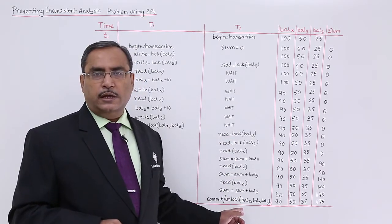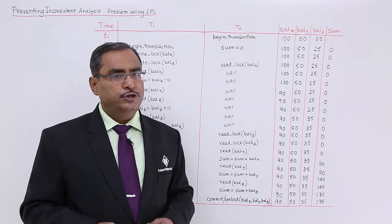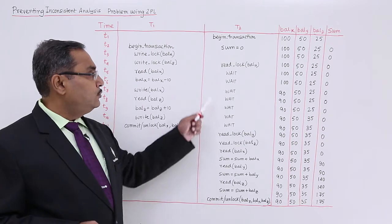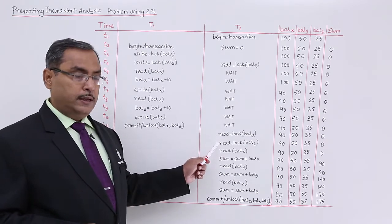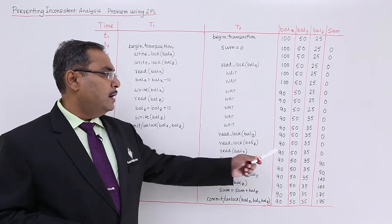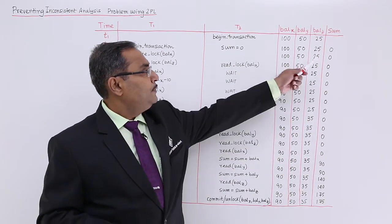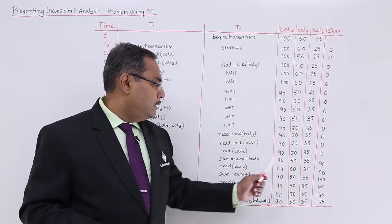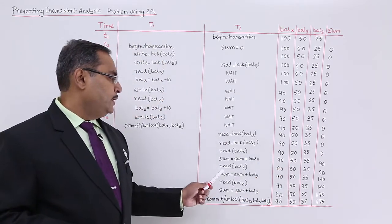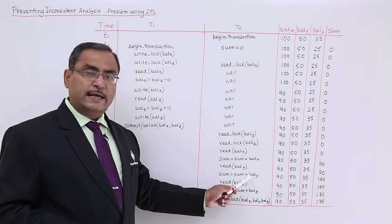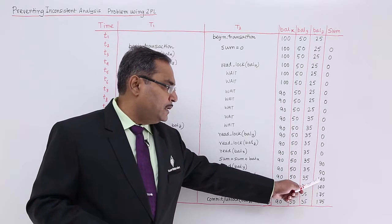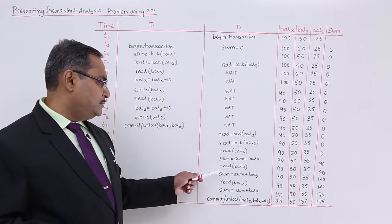Now those variables are now available for the transaction T2, so it is now passing through the growing phase. Now read balance X. Sum is equal to sum plus balance X. Sum was having the initial value zero from T2 instant. Now this balance X has got added. 90 has got added to it. Read balance Y. Balance Y has got added with the sum. Balance Y is 50, so 90 plus 50, that is 140, has been added.